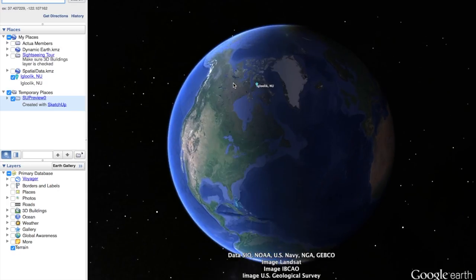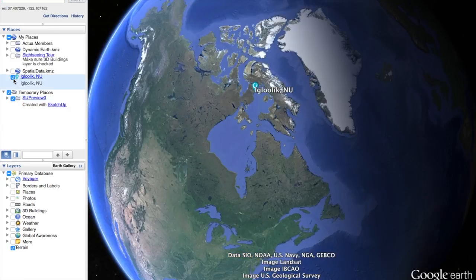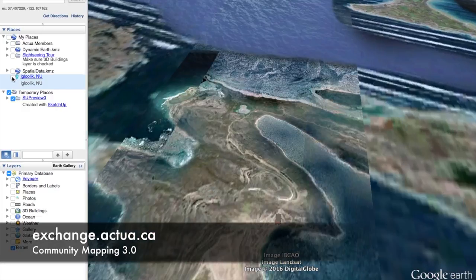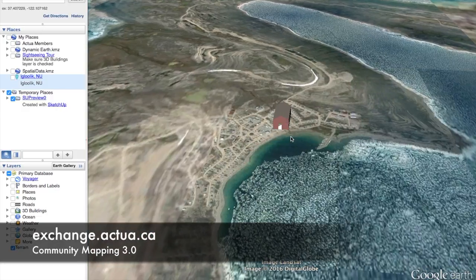Finally, we import all these models into Google Earth to see our possible community of the future. In communities of low internet connectivity, these images can be printed out and placed on the map.